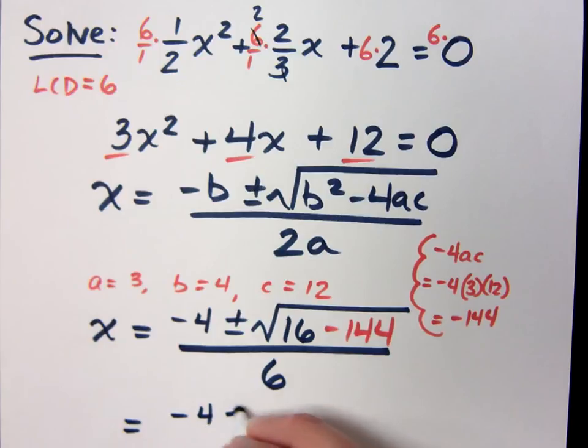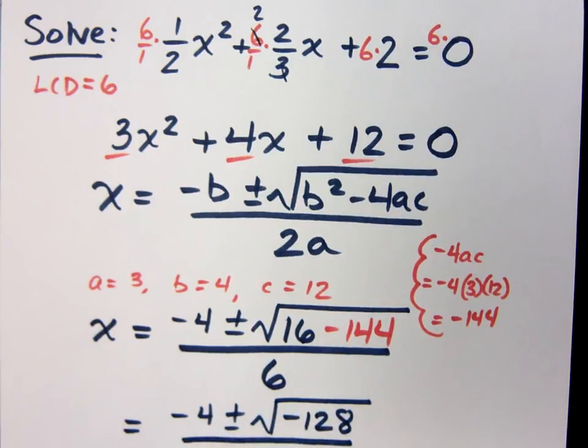So we get negative 4 plus or minus. Negative 144 and positive 16 is a negative 128. And this is all divided by 6.